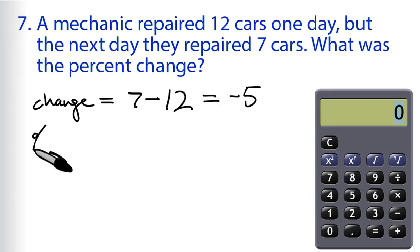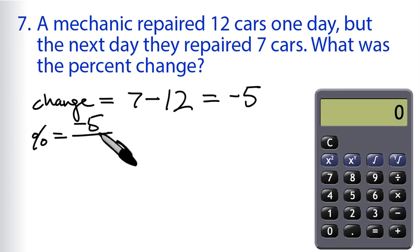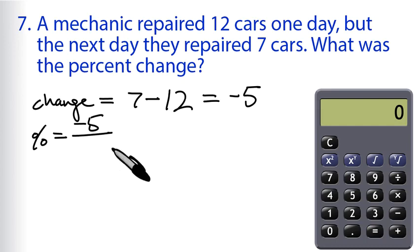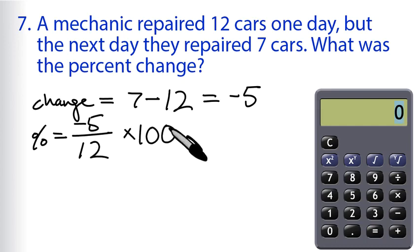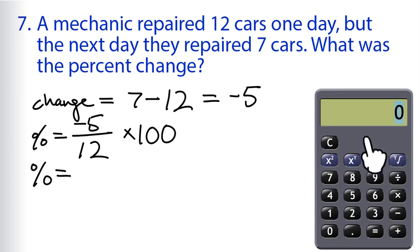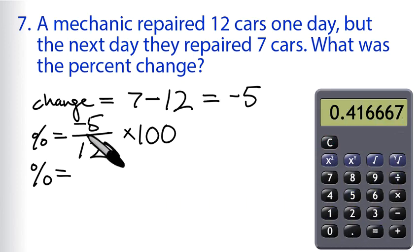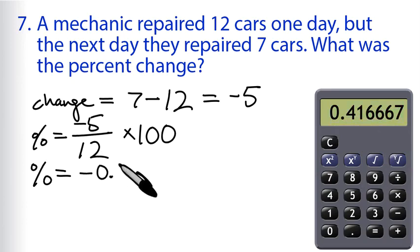Now we plug that into our formula. The percent change equals the absolute change, negative 5, divided by the original amount, which was 12. So we have negative 5 divided by 12, multiplied by 100. This calculator doesn't have a negative button, so we enter 5 divided by 12. The answer should be negative, giving us negative 0.416.